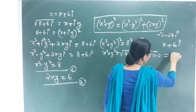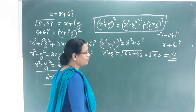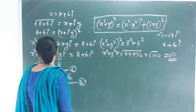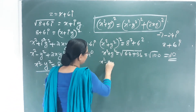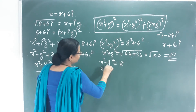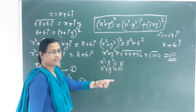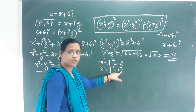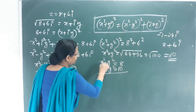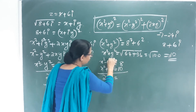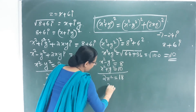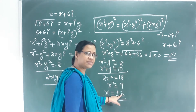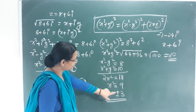We take x² + y² = +10 (positive, since any square is positive). Adding Equation 1 and Equation 3: (x² − y²) + (x² + y²) = 8 + 10 = 18, so 2x² = 18, giving x² = 9, and x = ±3.